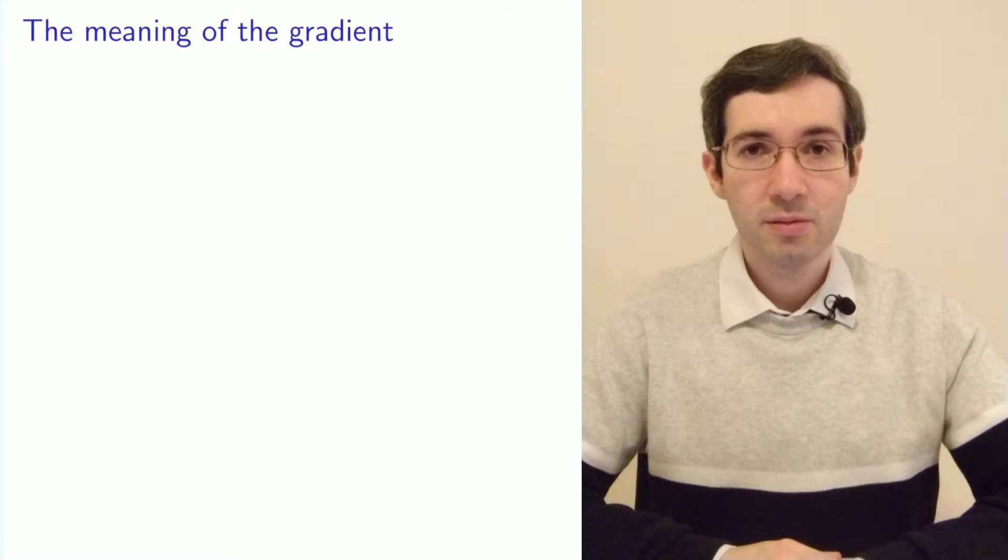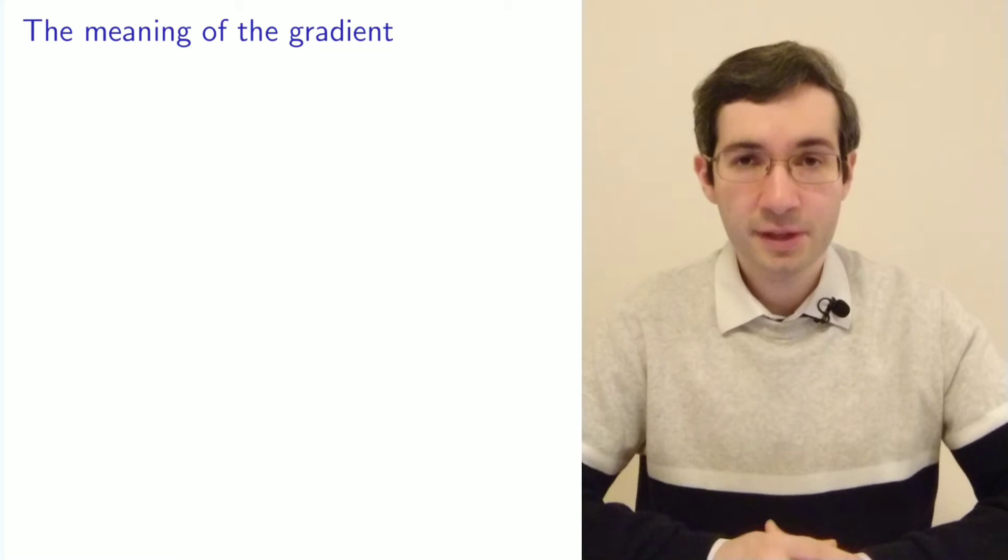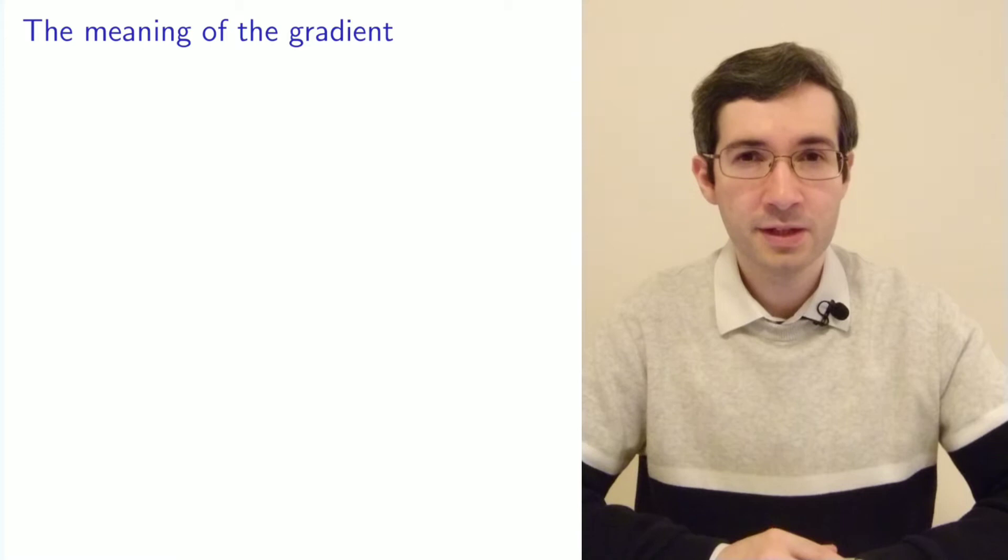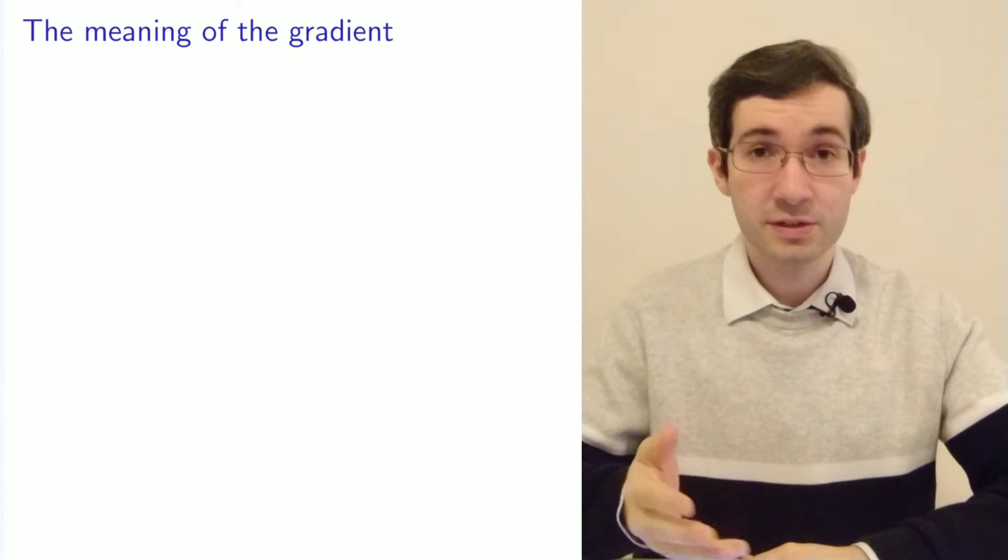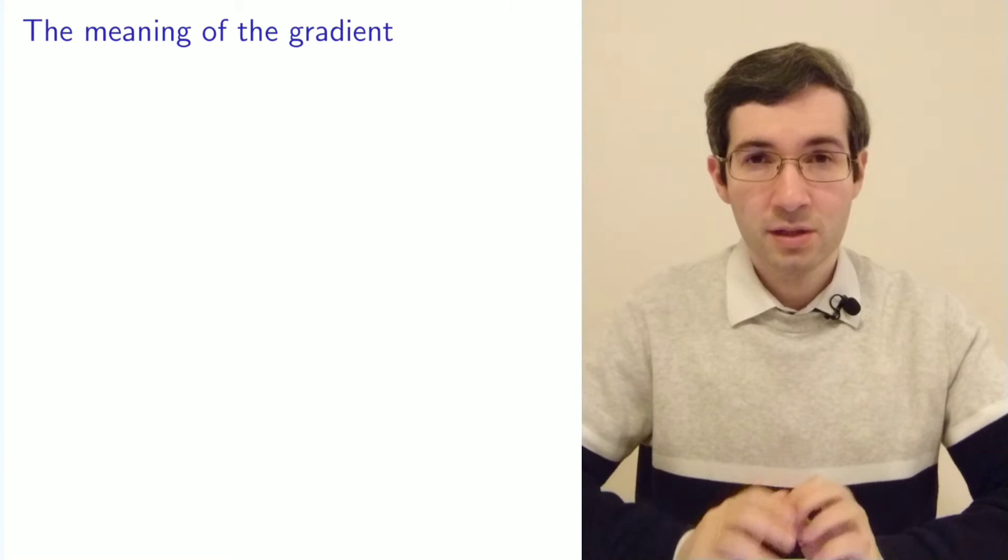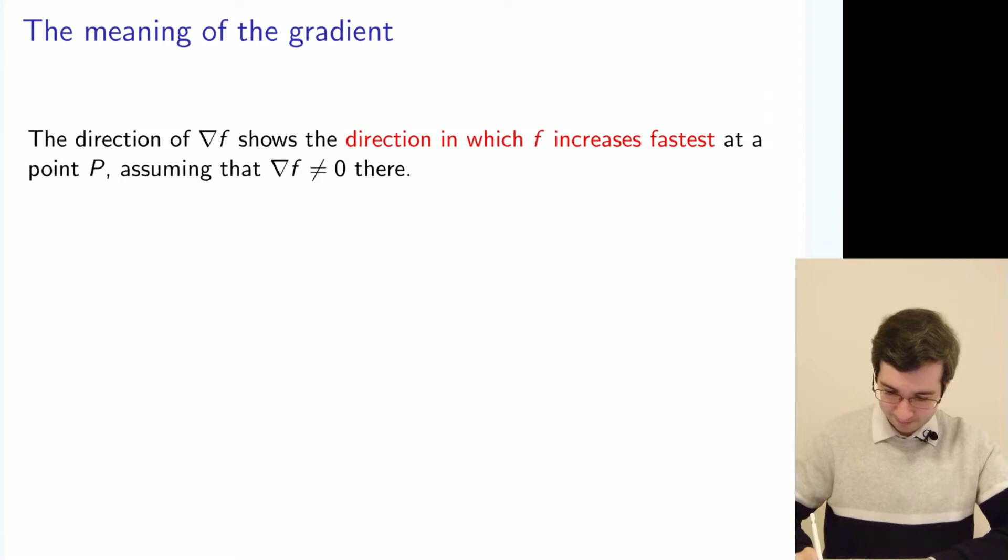We learned something about the gradient of the scalar field, but what does it mean? What are the interpretation and applications of the gradient? Intuitively, you could think that gradient means something is changing - gradient of color or concentration - but we can define it quite formally.